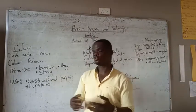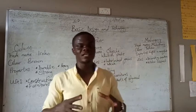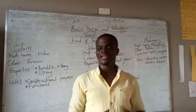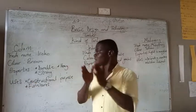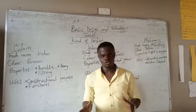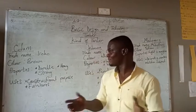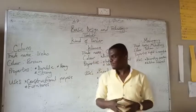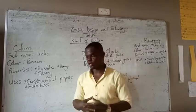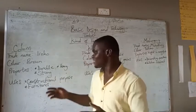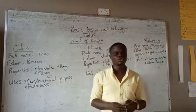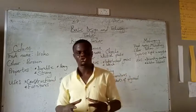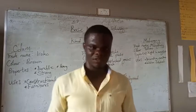First, let's take udum. The trade name for udum is iroko — that is the trade name for udum. Udum is brown in color. It is also very heavy and strong. Because of its heaviness and strength, udum is used for expensive furniture. It is also used for constructional purposes.